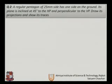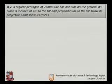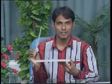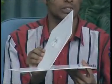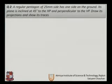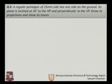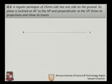One side is on the ground and the plane is inclined at 45 degrees to the HP. The pentagon is making 45 degrees to the surface plane. This is the initial position, perpendicular to the VP. We need to draw its projection and show its traces — that is, generate the top view and front view. This is our XY line.